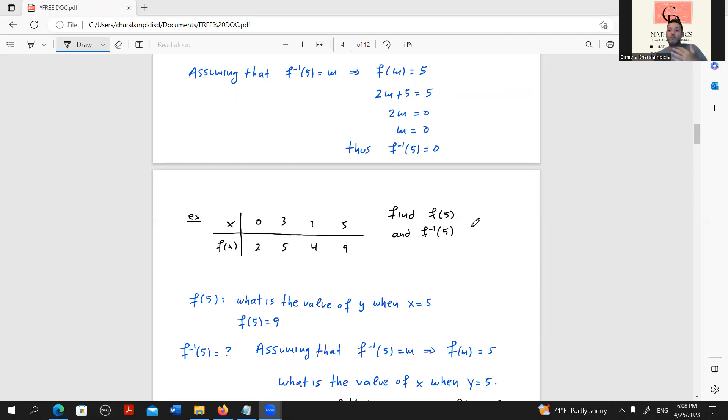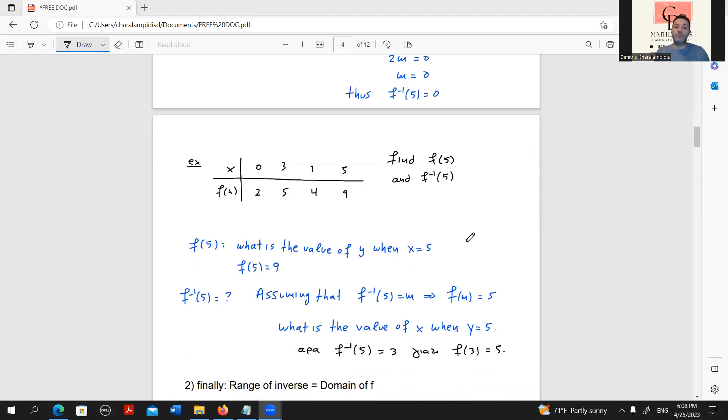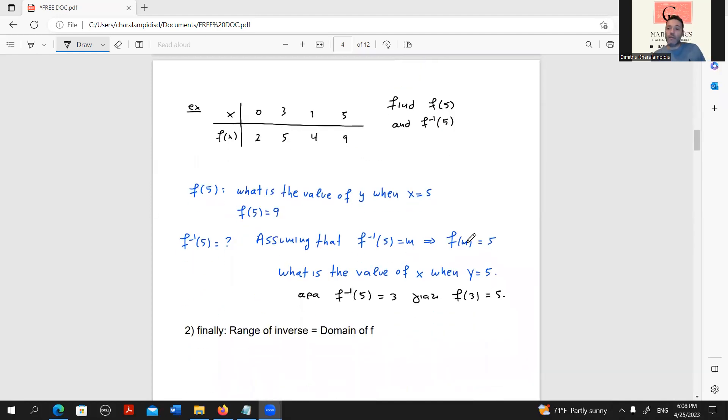But what about f^(-1)(5)? This suggests knowing the inverse function, which we don't. We will once again use that property. Assuming that f^(-1)(5) is equal to M, that would mean f(M) equals 5. And how can we interpret that? This would mean that when y is 5, what is the value of x? We can then use the table. We can see that when y is 5, the corresponding x value is 3. So f^(-1)(5) is equal to 3.